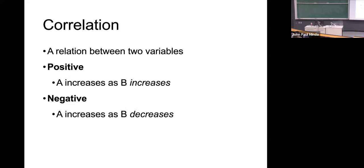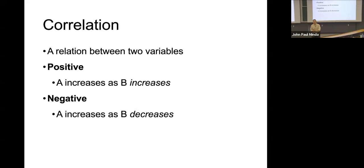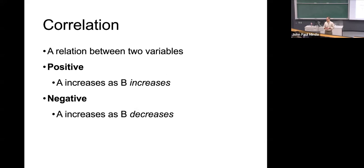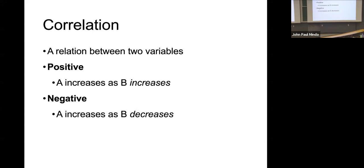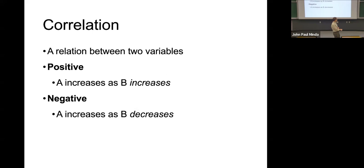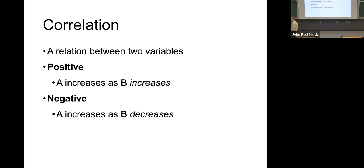Noticing correlations is itself a form of specific-to-general inductive reasoning — in fact, it's one of its cornerstones. If something is correlated with something else, there's often a reason they co-occur, and as intelligent organisms our job is to notice those correlations and adjust behavior accordingly. A positive correlation means when one thing increases, the other increases; a negative correlation means when one increases the other decreases; and when there's no relationship, changes in one variable don't predict the other.